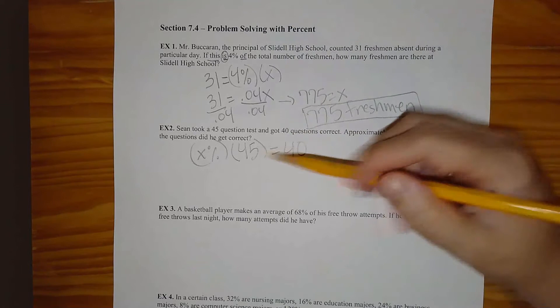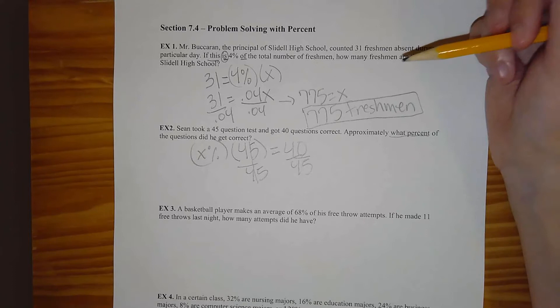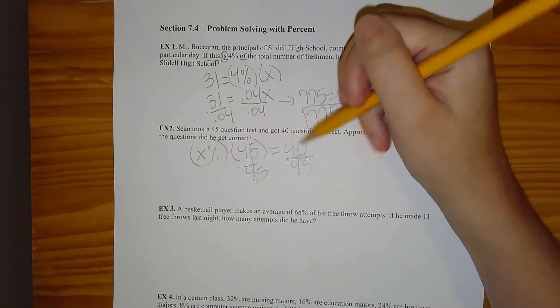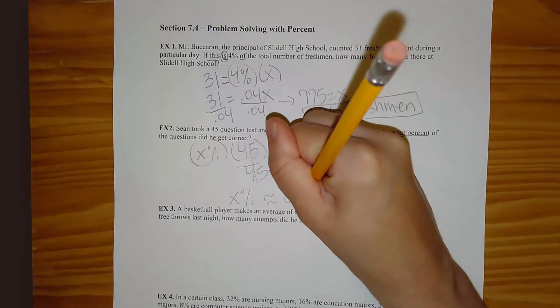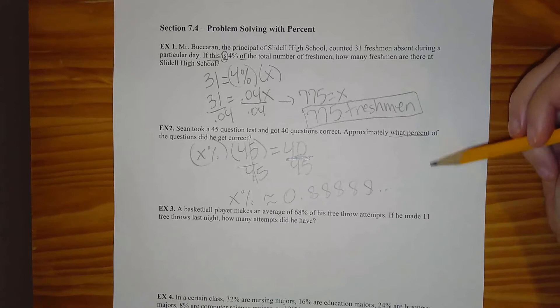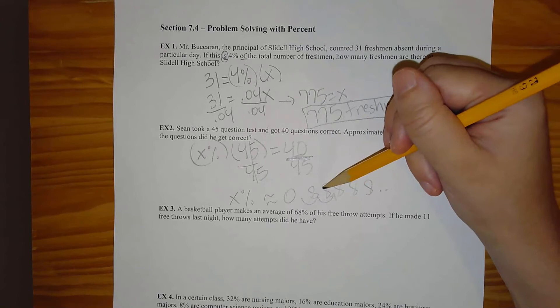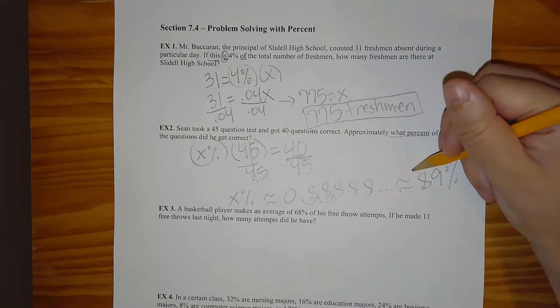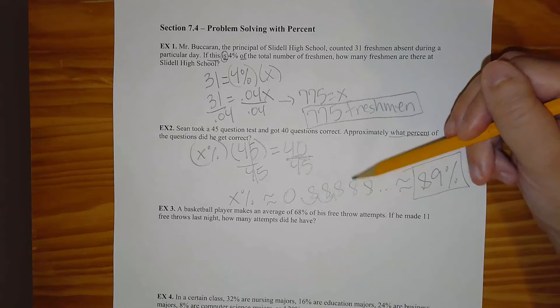If I want to solve for x, I'll divide by 45 on both sides. 40 out of 45 should remind you of what things look like on your test after you take one. 40 divided by 45 gives 0.8 repeating — your calculator will show 0.88888 and keep going. Moving the decimal two spots gives 88.8 repeating, which rounds up to approximately 89%. If you need to round to the nearest tenth, that would be 88.9%.